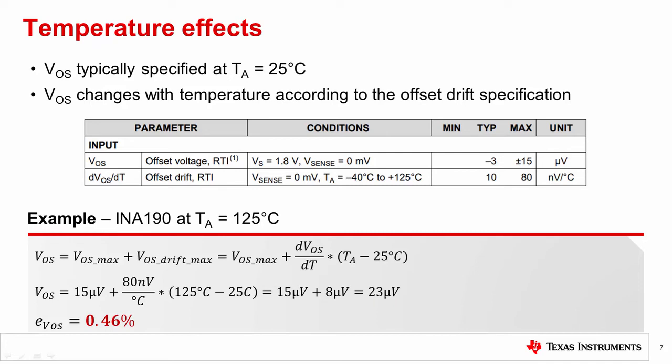Calculating offset error, as we did before, gives a new result of 0.46% compared to our previous result at room temperature of 0.3%. This is a small increase. This is because the INA190 is designed with zero drift architecture that preserves its excellent offset performance over temperature. Other devices may have different results.